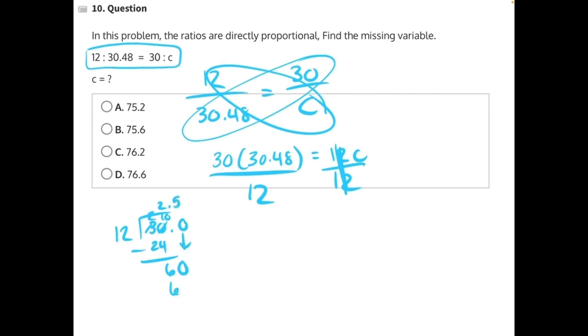That's evenly without remainder. So we can reduce this down to 2.5 times 30.48, and that is equal to c.